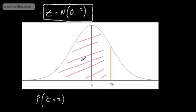Usually, to find an area we would integrate. The integral to find this area is really quite complex and certainly beyond the scope of the course. Instead, what we do is use the standard normal and the tables associated with it — often called Z tables — and all we do is find our value and read off.